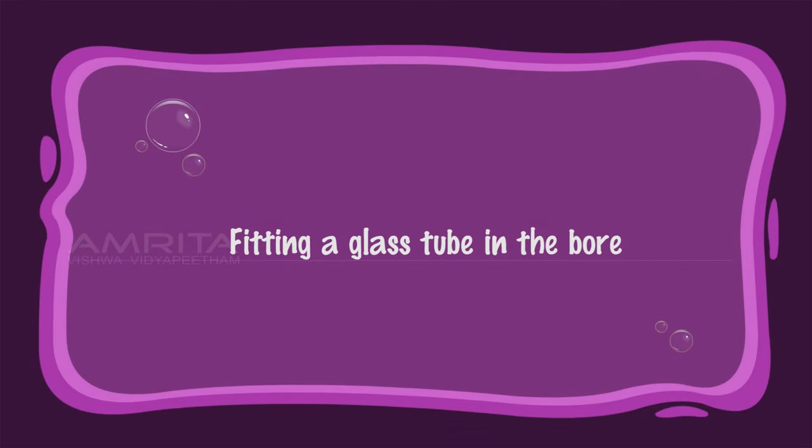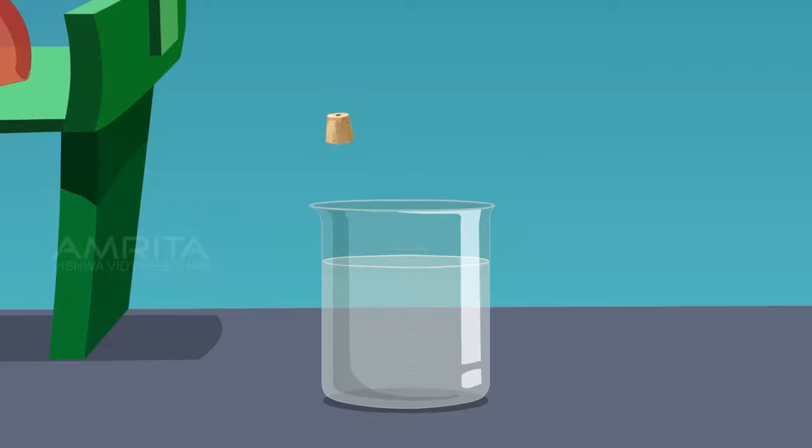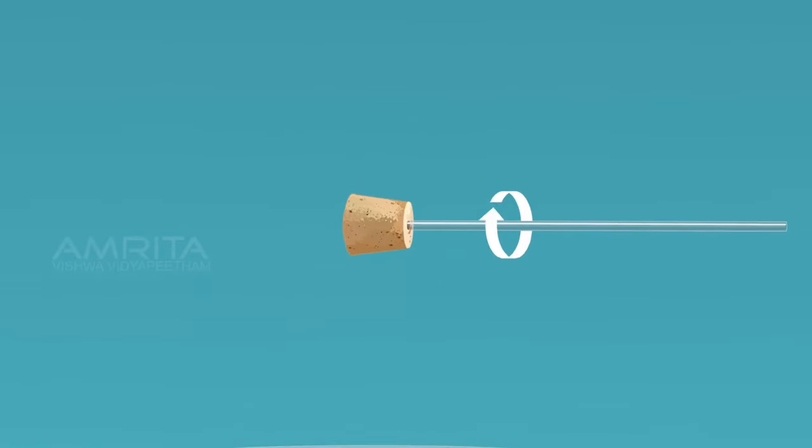Fitting a glass tube in the bore: Dip the bored cork in water. Take a glass tube and wet the end of the tube with water. Insert the tube into the bore by rotating it.